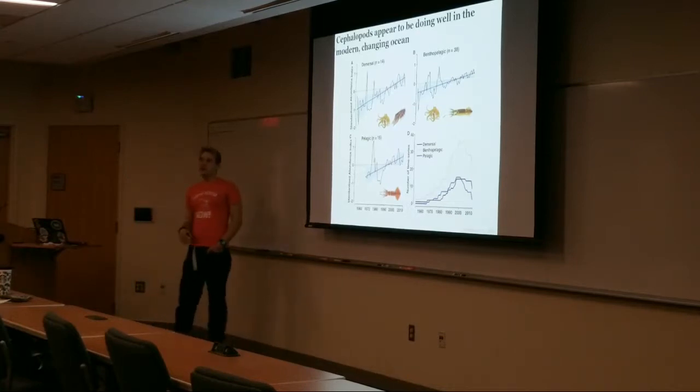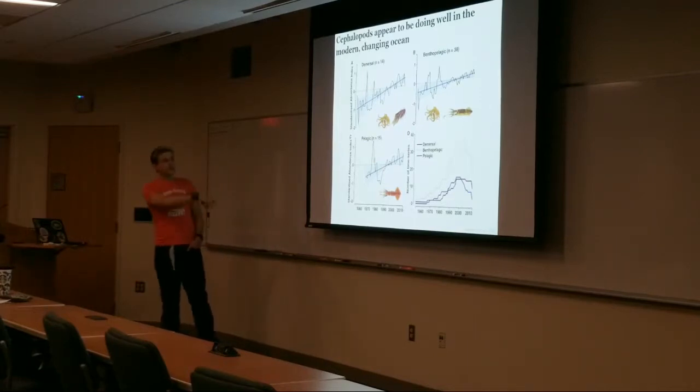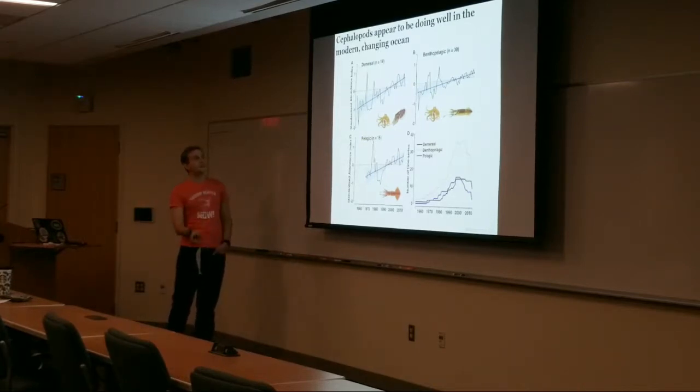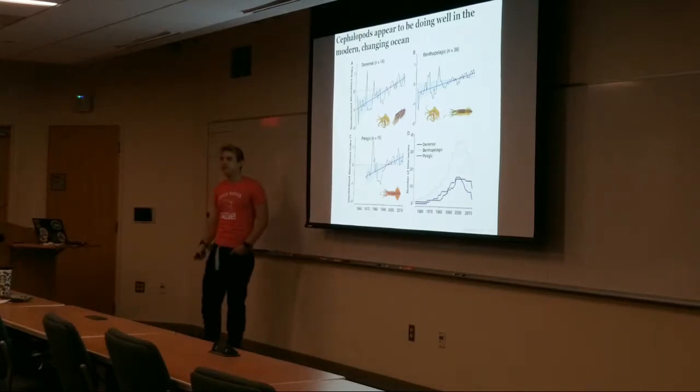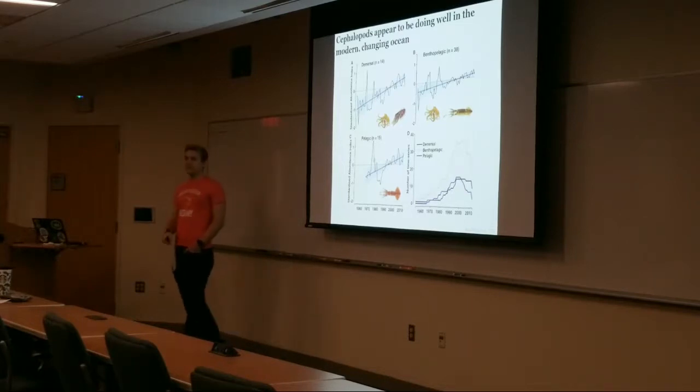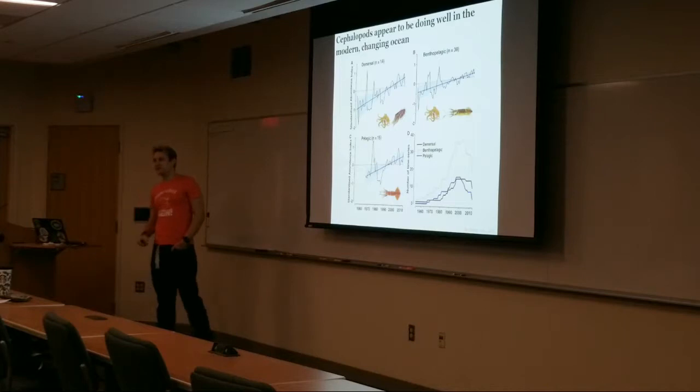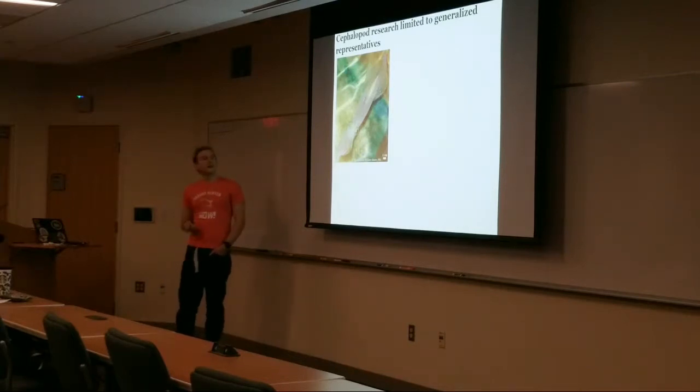So yeah, cephalopods, as far as we know from these fisheries and survey data, appear to be doing pretty well, and this is based on standardized metrics of abundance combining fisheries data over the last 50 years, as well as survey data. But the thing I want to point out is there's 14 species of demersal cephalopods, 38 species of epipelagic, there are 800 at least species of cephalopods in the world. This is a very small subsample of those that we're making a broad generalization about, and that's kind of how my job works. Cephalopod research is limited to what we have access to, it's just the nature of the beast.